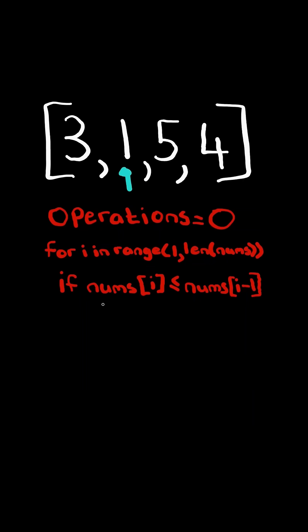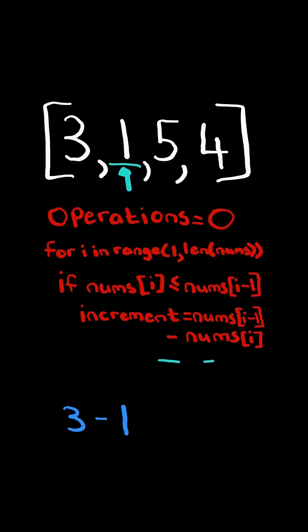If the current element is less than or equal to the previous element, then we need to apply some operations to make the list strictly increasing. We take the previous number and subtract it by the current number and add one.